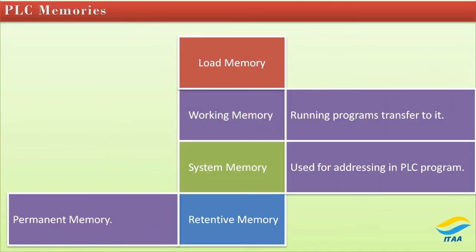Working memory is like RAM. The currently running program is transferred to this part of the memory — that's what we call working memory. Then we have system memory, which is used for addressing in the PLC program. For example, input address I0.0 coming from a push button is used to identify a specific plant device or input. That particular address is stored in the system memory — the memory area used for storing addresses in the PLC program.